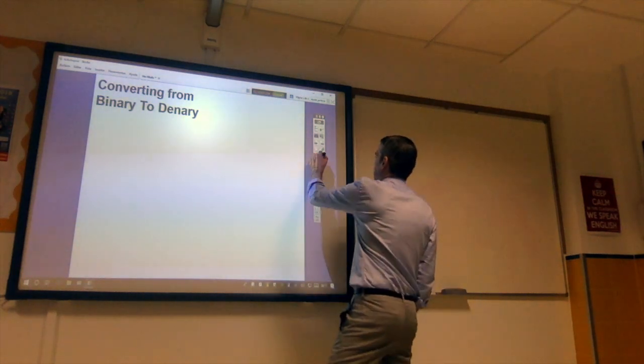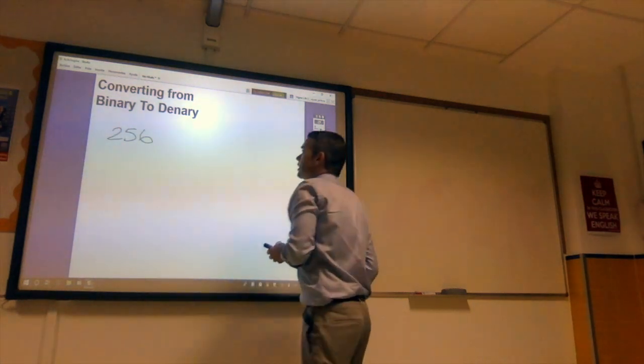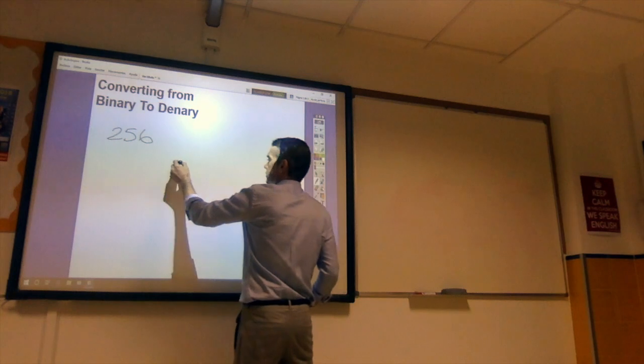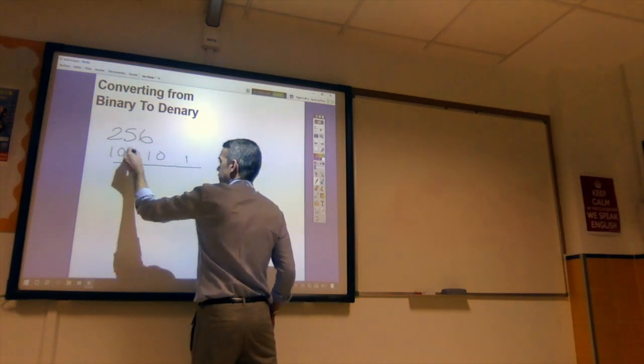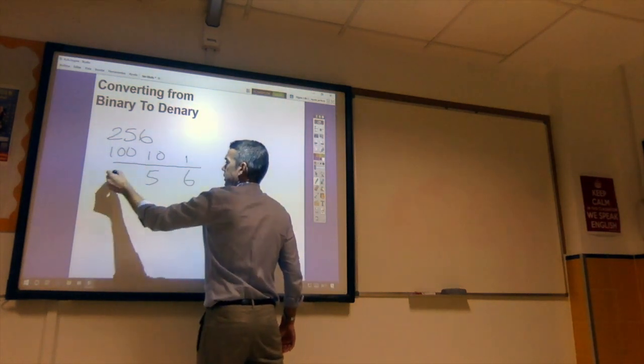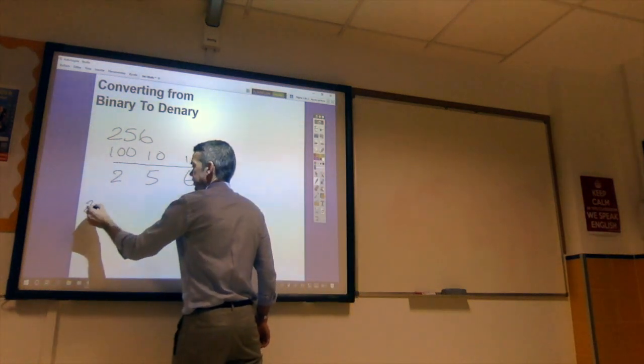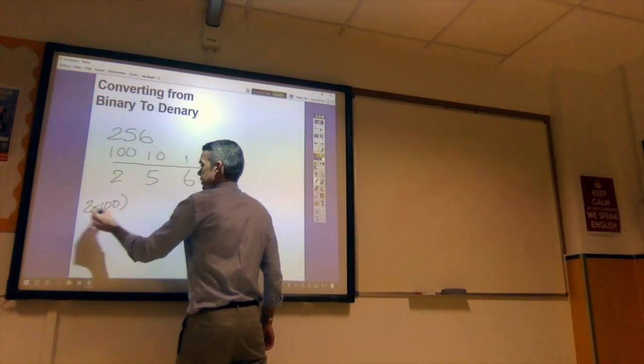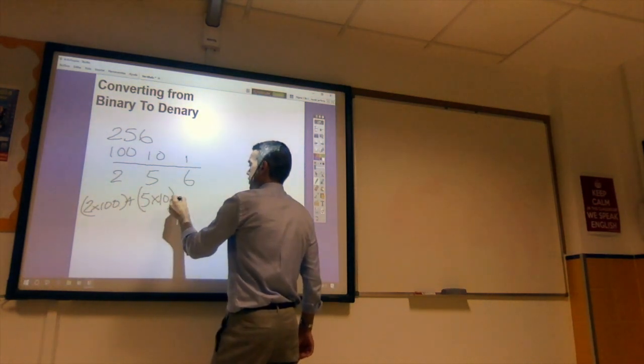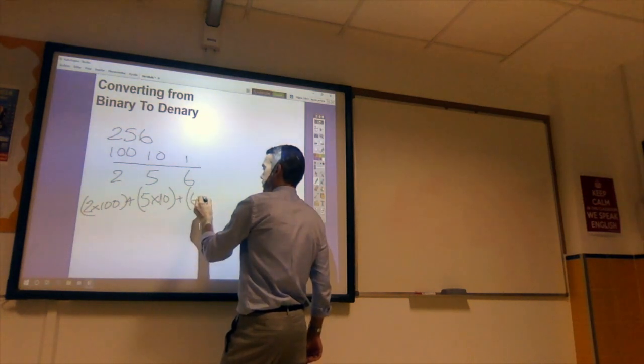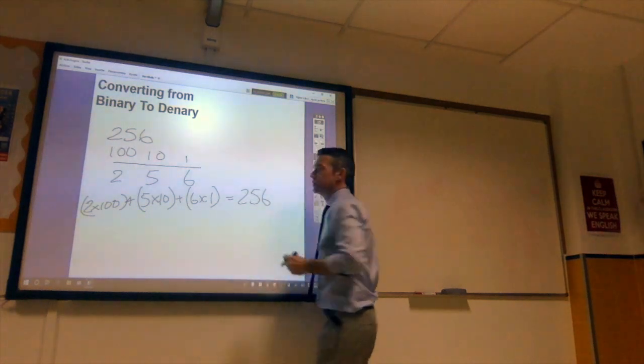So if we have the number 256, then we have 6 units, 5 tens and 2 hundreds. And to make that conversion, we say 2 times 100 plus 5 times 10 plus 6 times 1, which gives us 256.